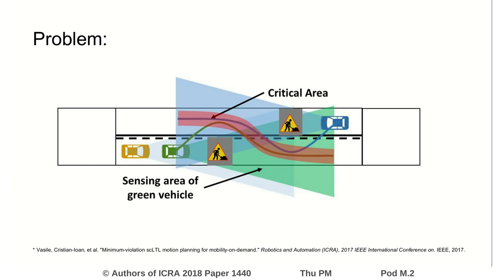Each vehicle has their nominal trajectory already computed using the aforementioned approach. However, as you can see, if they were to continue on their path it would result in a collision, signified by the red region in the image.